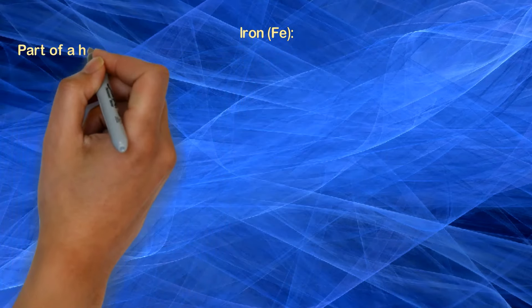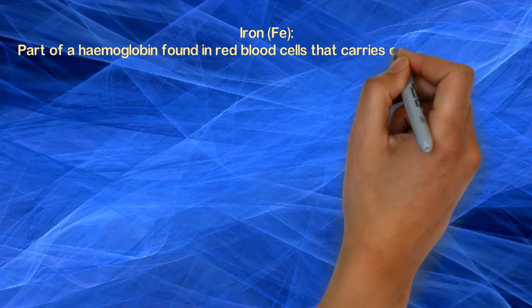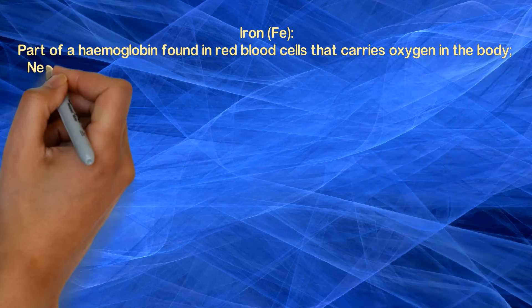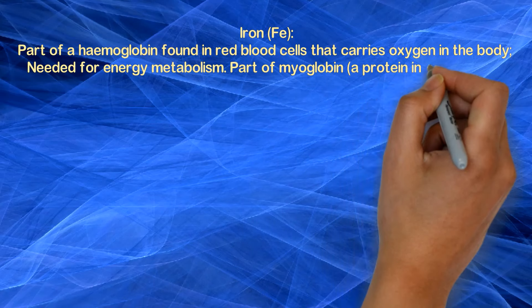Iron is part of hemoglobin found in red blood cells that carries oxygen in the body, needed for energy metabolism, part of myoglobin, a protein in muscle cells.